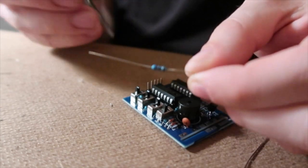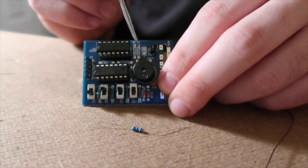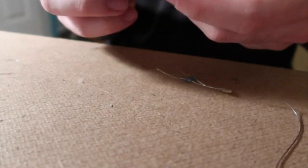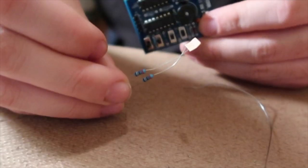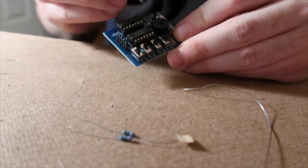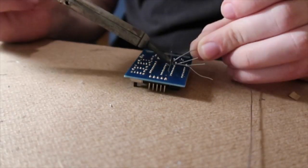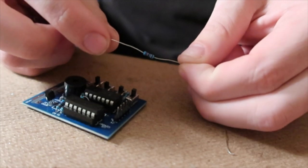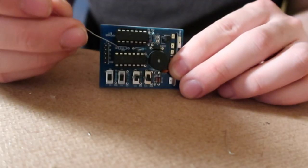The 620k resistor goes over here. These two are the 270k resistors. They go here and here. The 62k resistor goes over here.